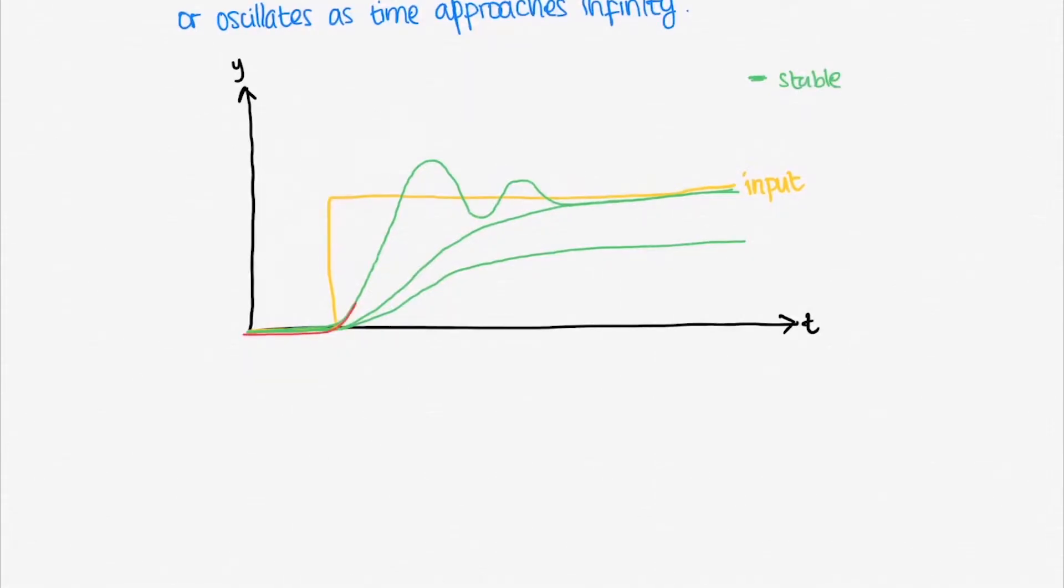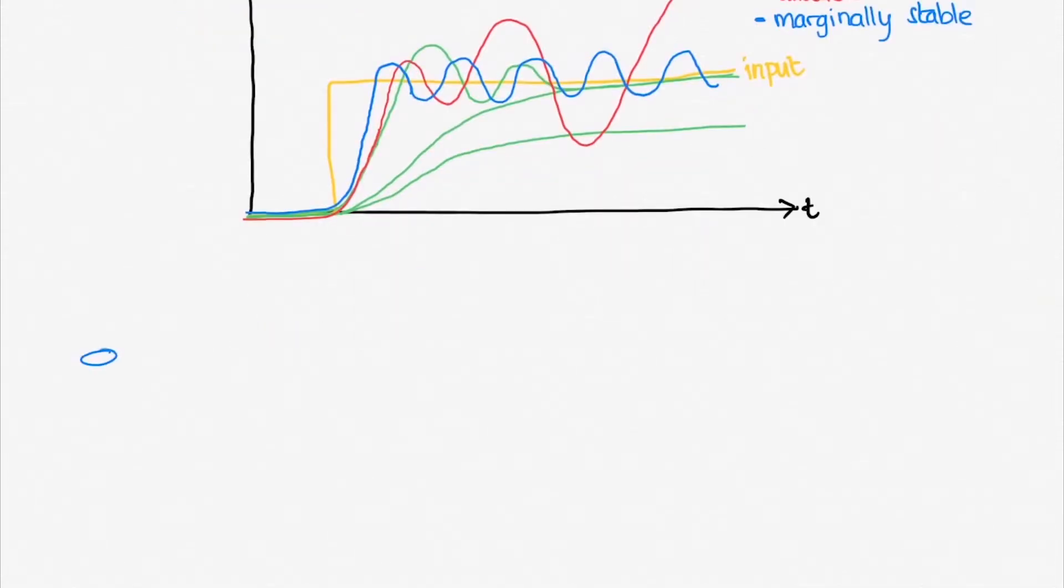On the other hand, the response of an unstable system will just diverge. It just grows without bounds. Well then, what about marginally stable systems? The response will neither converge nor diverge. It just oscillates around the desired output.